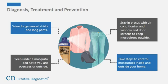Protection against mosquito bites is a key measure to prevent Zika virus infection. When in areas with Zika and other diseases spread by mosquitoes, take the following steps: wear long-sleeved shirts and long pants; stay in places with air conditioning and window and door screens to keep mosquitoes outside; take steps to control mosquitoes inside and outside your home; and sleep under a mosquito bed net if you are overseas or outside.